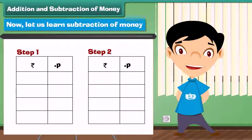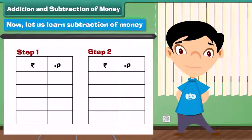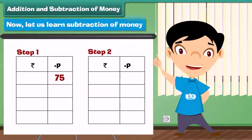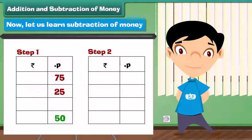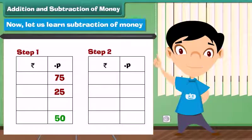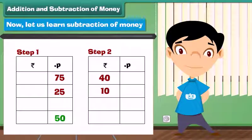Now let us learn subtraction of money. Subtract 10 rupees 50 paise from 40 rupees 75 paise. Step 1: Subtract the paise column — 75 minus 25 equals 50 paise. Write 50 under the paise column. Step 2: Subtract the rupees column — 40 minus 10 equals 30. Write 30 under the rupees column.